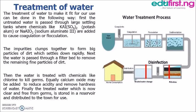First, untreated water is passed through large settling tanks where chemicals like potash alum or sodium aluminate are added to cause coagulation and flocculation. We can see the settling tanks here where the raw water is passed. Coagulation is the coming together of all the dirt particles in the water to form bigger particles so they can easily settle at the bottom of the settling tank and be sieved out at once.